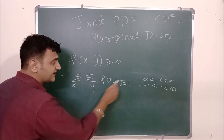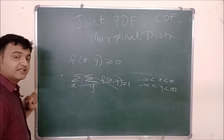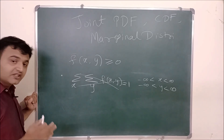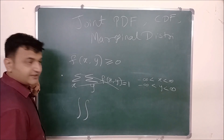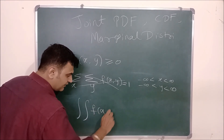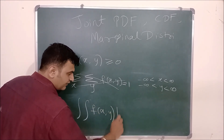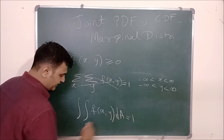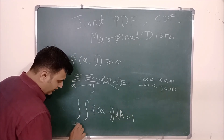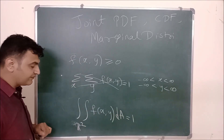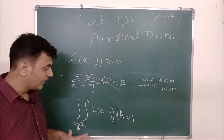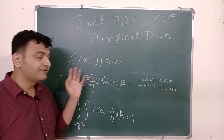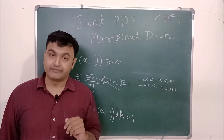That was for the discrete case. For the continuous case, the continuous version of summation is integration. So the double integral of f(x, y) over complete R² — where X goes from minus infinity to infinity and Y goes from minus infinity to infinity — equals one. If you have such a function satisfying this, it is called a joint PDF.